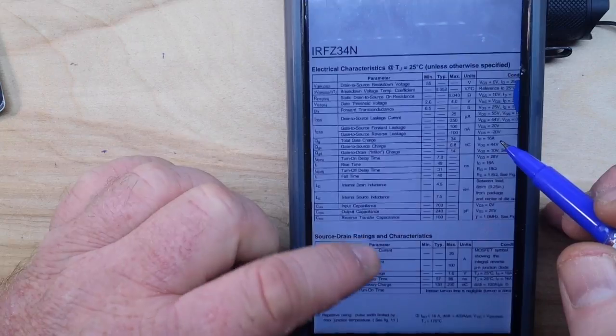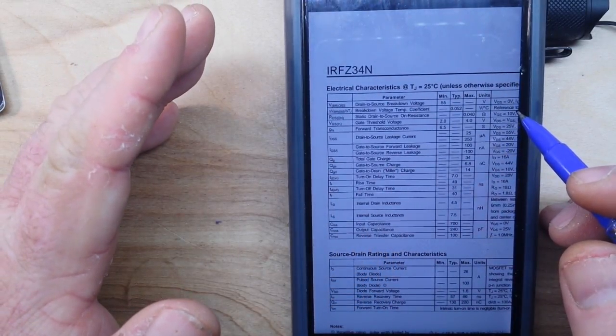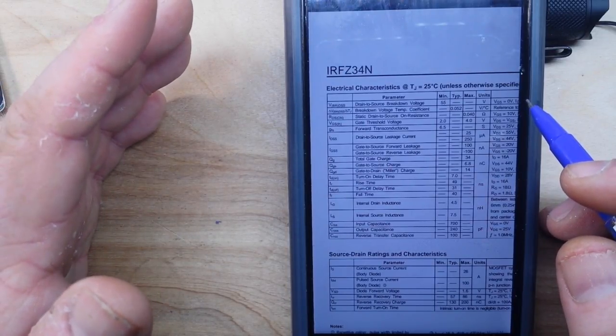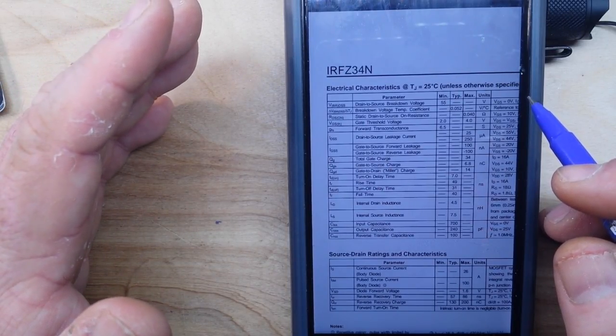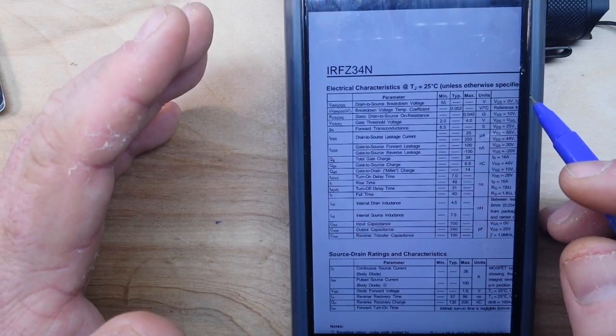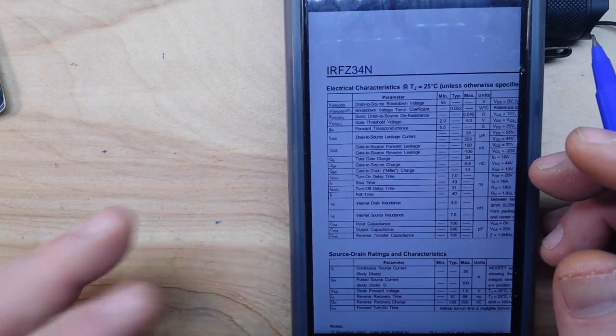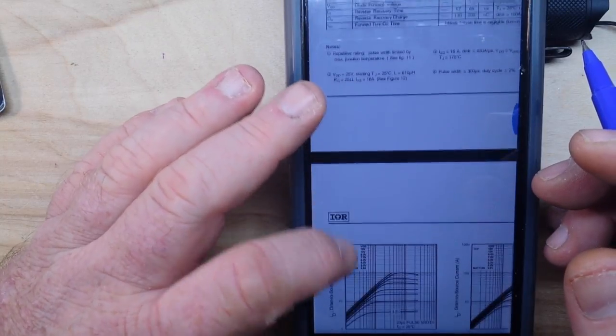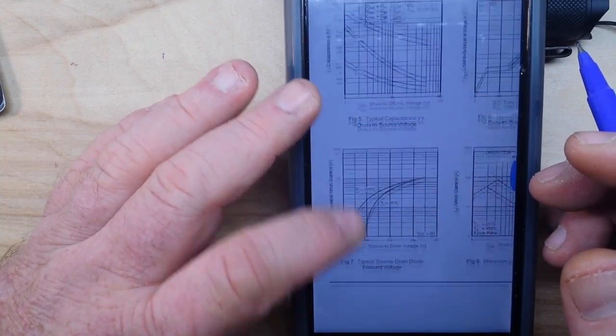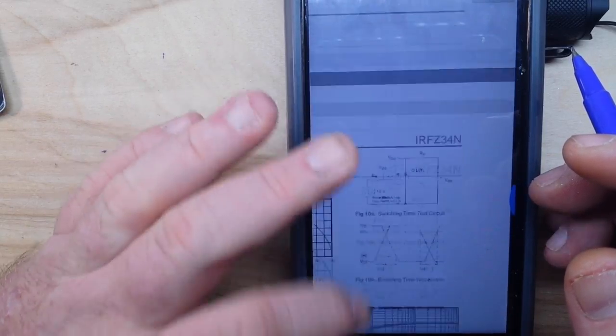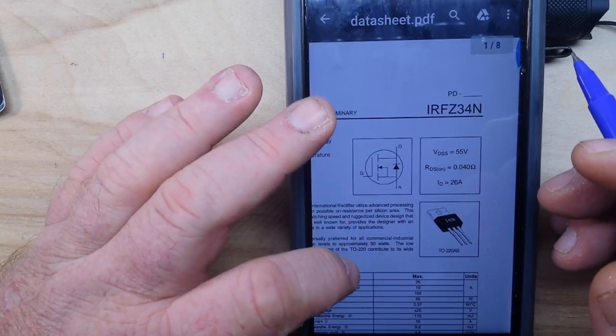So you see the advantages of this over the standard BJT, and this is one of the reasons that it has taken over as the most popular transistor in use today as opposed to the BJT. It's stronger, it's almost better in just about every way. However, it does have its downsides. One of those is thermal.